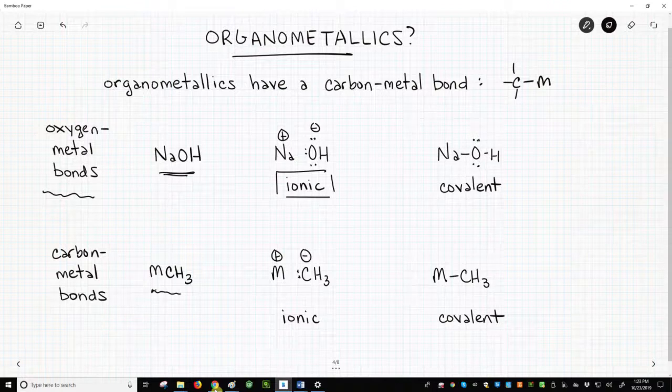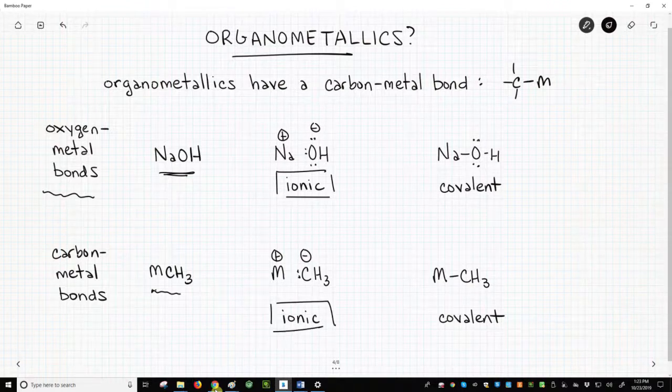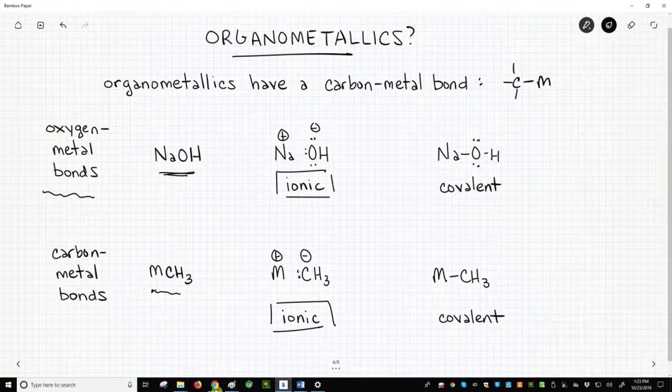Therefore, when I show organometallic species, the ones that we'll see in this playlist, I will show them as ionic structures: a carbanion and a positive metal.